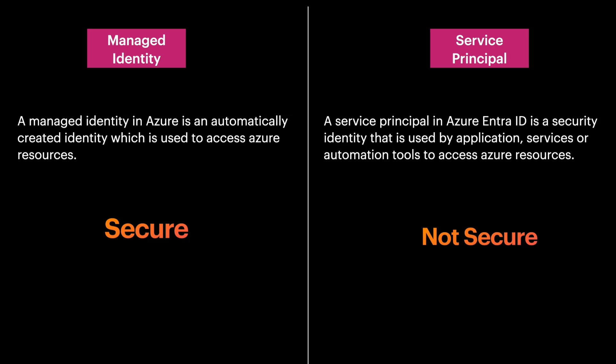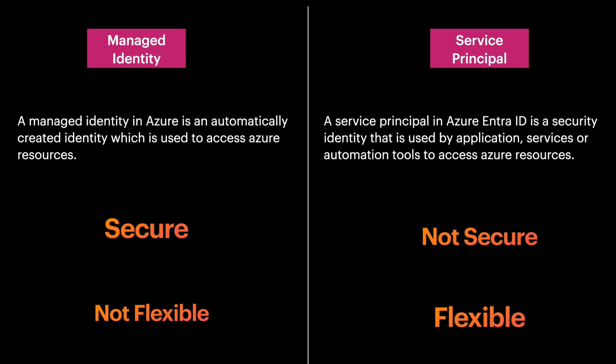The biggest weakness of managed identity is that it is not flexible, since we don't have much control over it — it is completely managed by Azure with only a few configuration options. On the other hand, service principal is very flexible: you can create as many service principals as you like, and they can be used across multiple internal and external services to configure access.